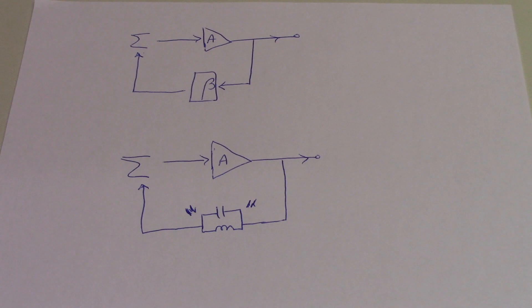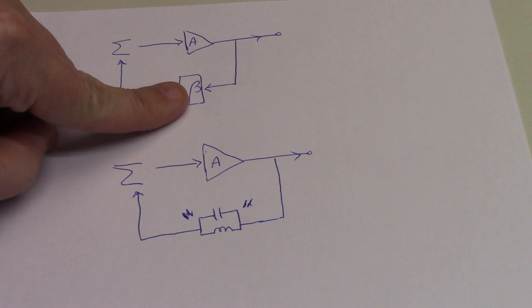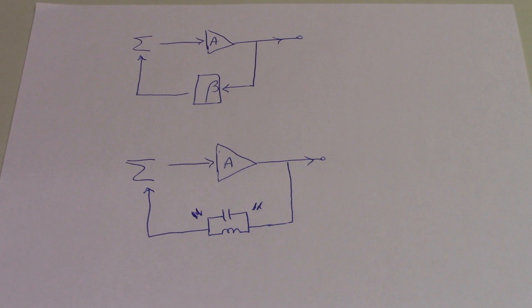The Colpitts series capacitor serves as both a voltage divider to feed a fraction of the output back into the amplifier, and also to do the phase shifting process.